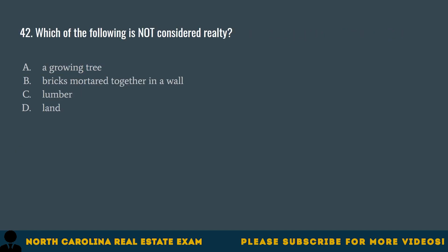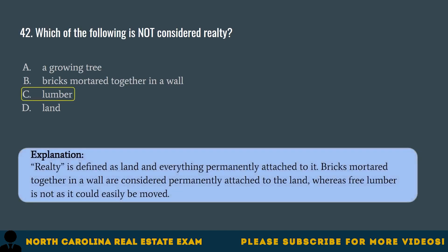Question 42. Which of the following is not considered realty? A. A growing tree. B. Bricks mortared together in a wall. C. Lumber. D. Land. The correct answer is C. Lumber. Realty is defined as land and everything permanently attached to it. Bricks mortared together in a wall are considered permanently attached to the land, whereas free lumber is not as it could easily be moved.